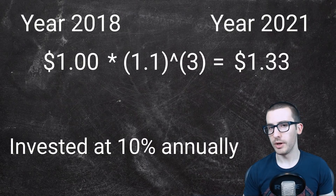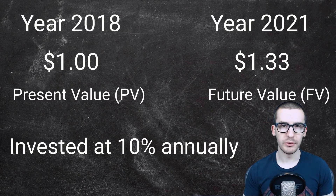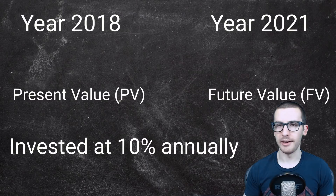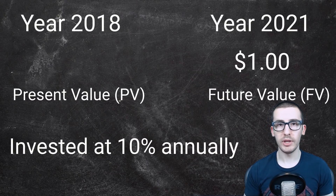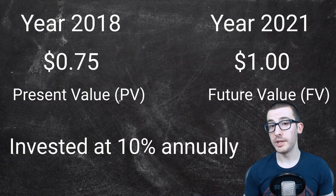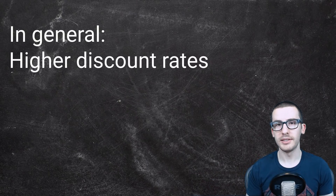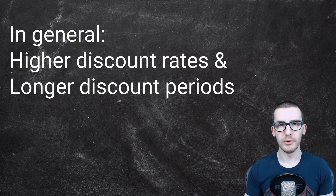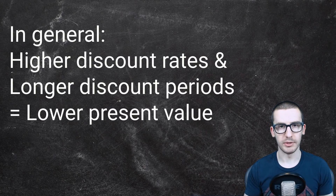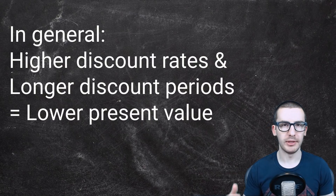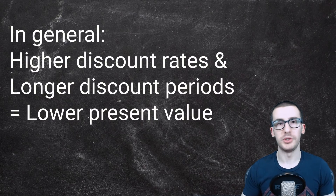For example, one dollar today invested at 10% per year is worth $1.33 in three years. This is done by taking that one dollar and multiplying it by 1.1 three times. So a present value of one dollar has a future value in three years of $1.33. By taking the inverse operation we can find that a dollar three years from now is worth only about 75 cents today — we divide that one dollar by 1.1 three times to get the present value of 75 cents. The higher the discount rate and the longer the period, the lower the present value today.